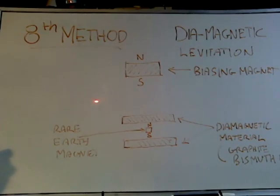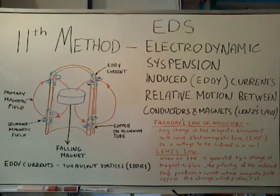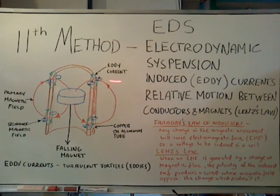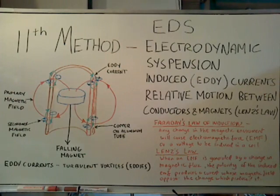Referring to method 8, the diamagnetic pyrolytic graphite, bismuth, etc. Eddy currents induced in a conductor produce repulsive forces, including levitation and lateral forces, and a retardation force.